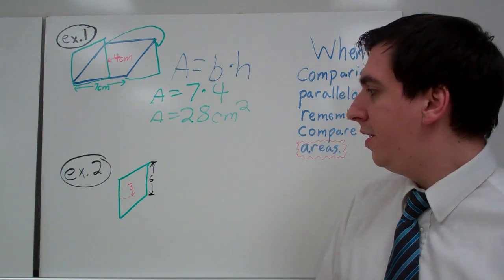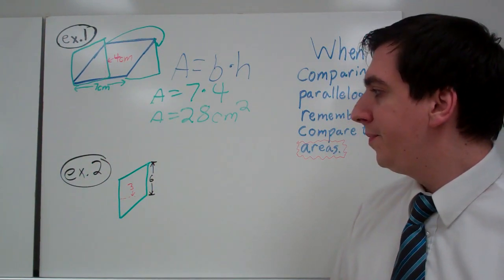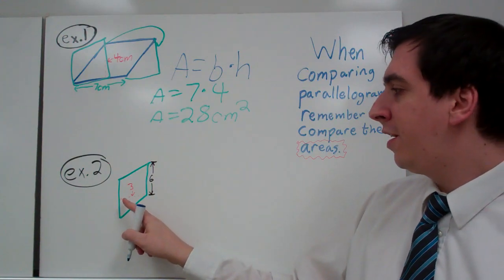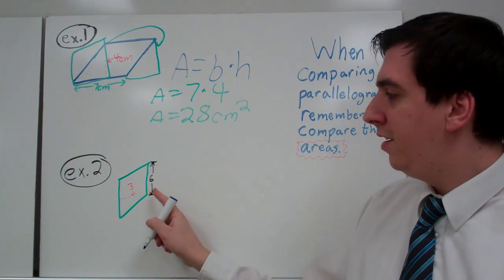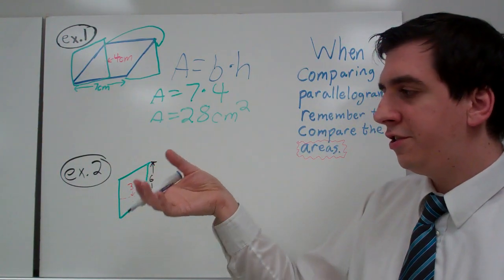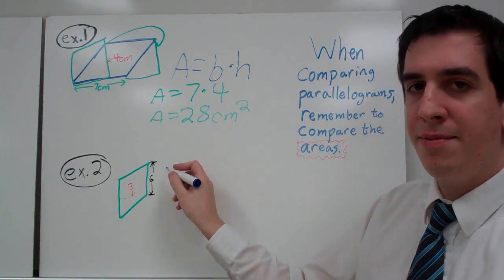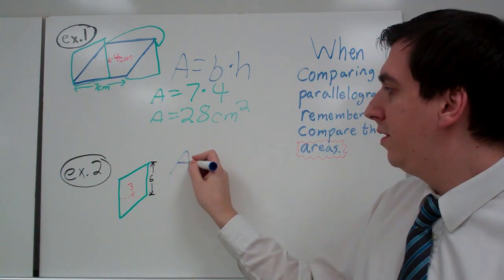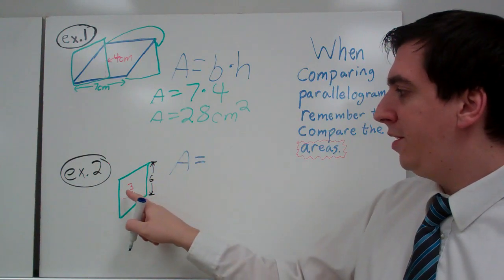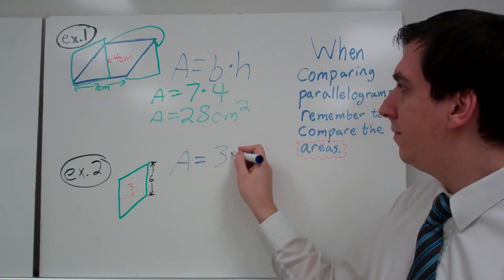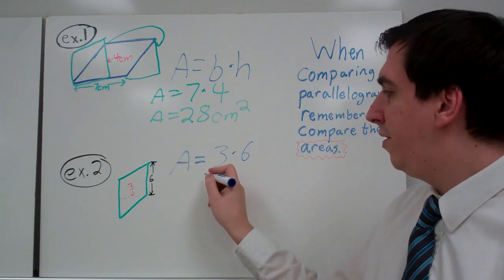Example 2 here has another parallelogram and, be really careful here, our height is 3 and our base is 6. It's just turned on its side. And that happens a lot in math too. So our area here is going to be 3 times 6, which you know is 18.